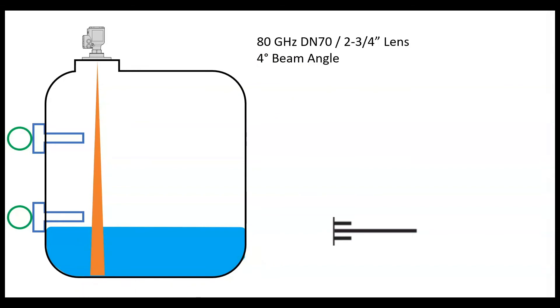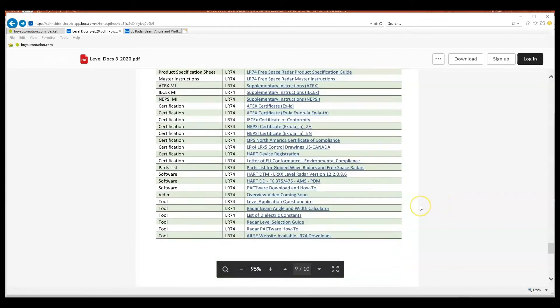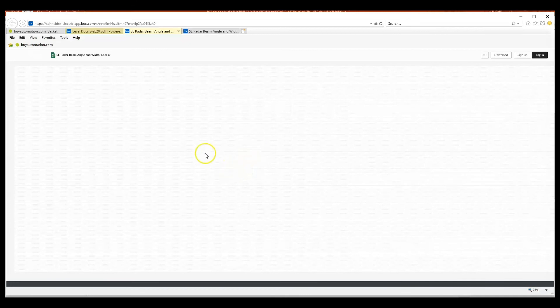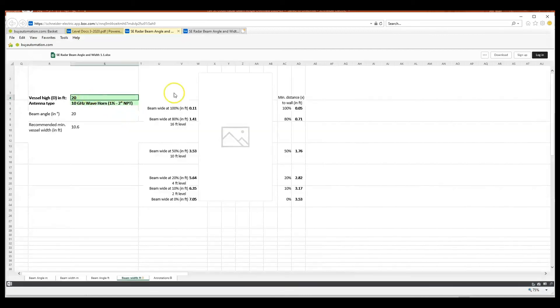So if you go to the web and you search for a radar beam angle and width calculator, you can find a variety of things. And this particular one I will show you - the easiest thing to do is let it load and then download it so you can work offline.